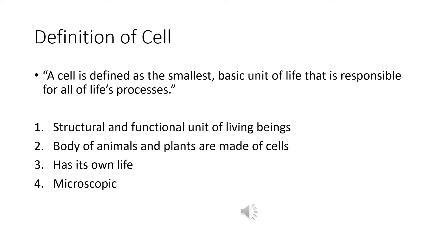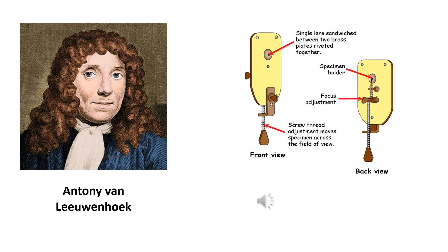Cells can't be seen with naked eyes. We use a microscope for viewing the cells. Now, we are looking at this gentleman who is known as Anthony Van Leeuwenhoek. He actually prepared the first magnifying glass. It doesn't look like a magnifying glass but it was a primitive magnifying glass. It has a single lens sandwiched between two brass plates riveted together.